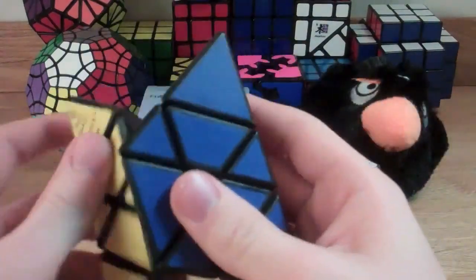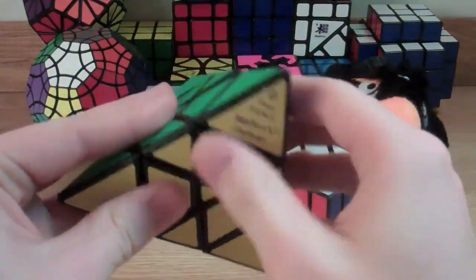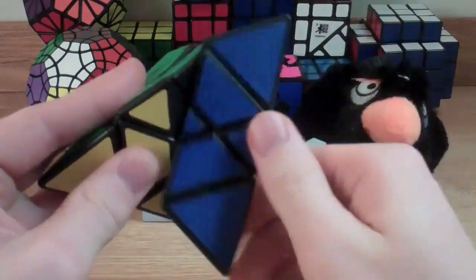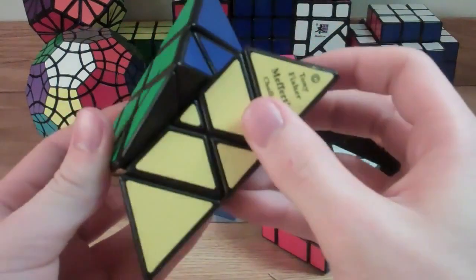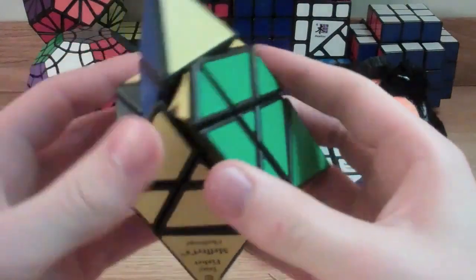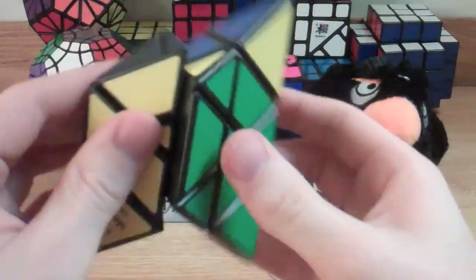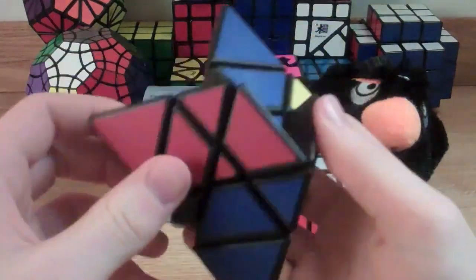These puzzles are a lot lighter than I thought they'd be. They're definitely lighter than my other 3x3 shape mod, the hexagon prism I think it is. And this puzzle also shape-shifts. There you go. So this one can get pretty messed up pretty fast.